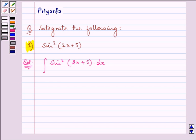We know that sin squared theta can be written as 1 minus cos 2 theta divided by 2. So on substituting,